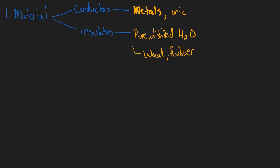So those are insulators and conductors, and the number one most important thing for whether something conducts electricity or not is its material. Number two, however, is temperature.